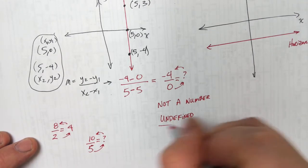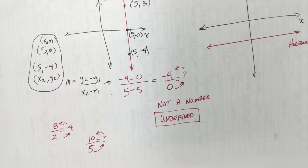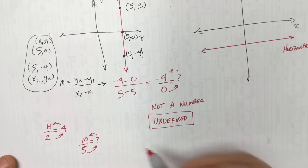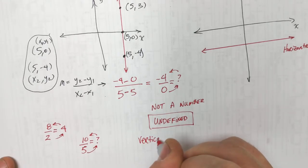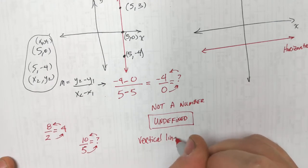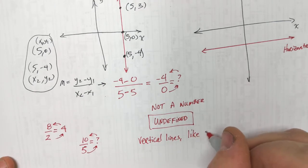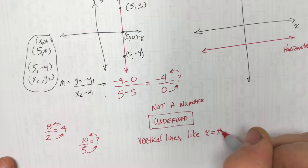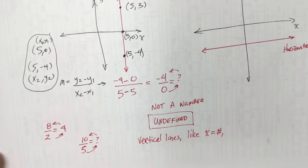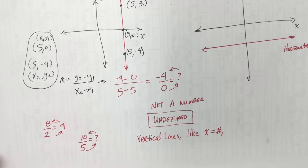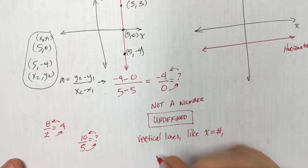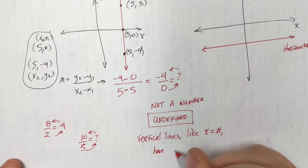The way we say that is we call it undefined. So vertical lines are always x equals some number, and they have undefined slopes — because you can't divide by zero.